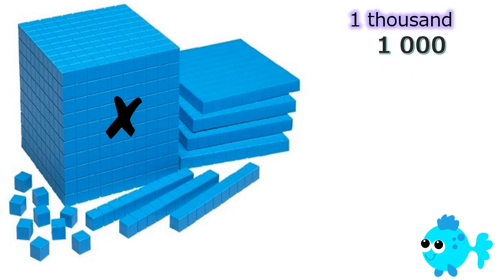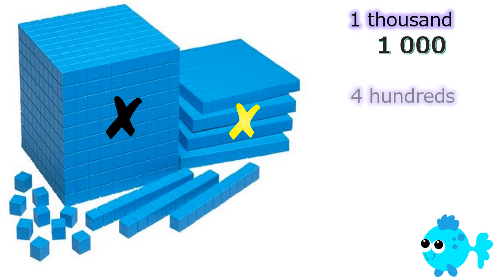Take a look at this yellow X. Can you tell what those blocks represent? If you said it represents 100s, you are correct. Can you identify how many 100 blocks there are? If you said 4, you are correct. There are 4 100s.